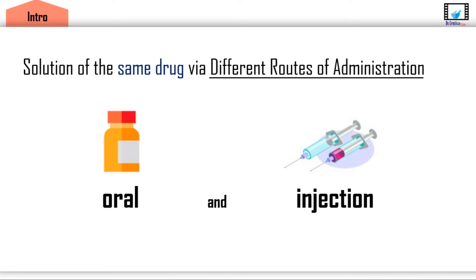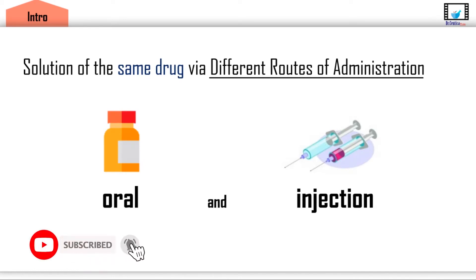The first question: suppose we have a solution of the same drug given in an oral form and an injection form. What do you think about the amount of drug in the bloodstream after one minute? Do you think more drug would be present in blood circulation after injecting the solution or after taking the oral one?